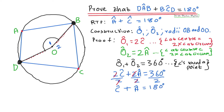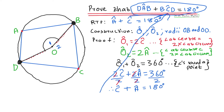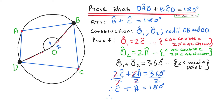This is easy! You can see that our required to prove matches our answer. I prefer the last step to match exactly what was asked in the question, so I write: therefore, angle DAB plus angle BCD equals 180 degrees. And you are done.